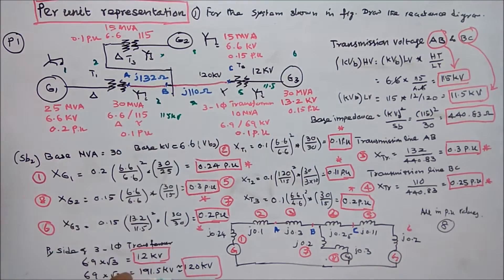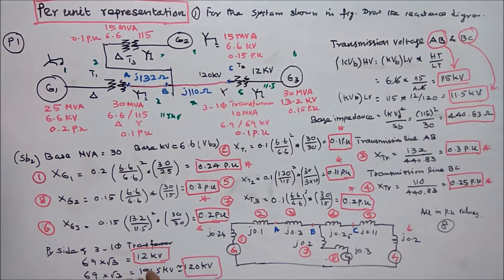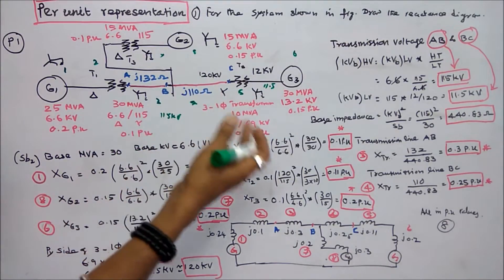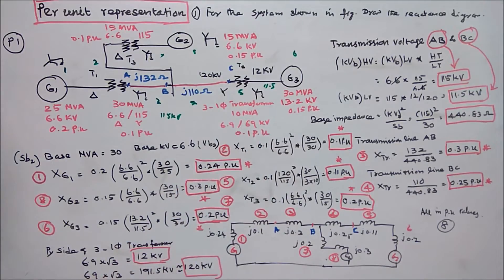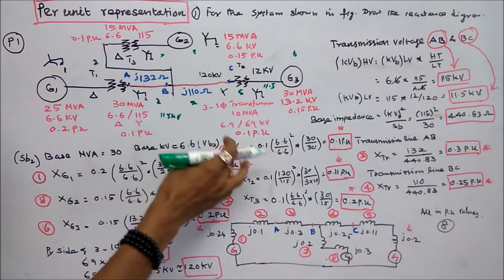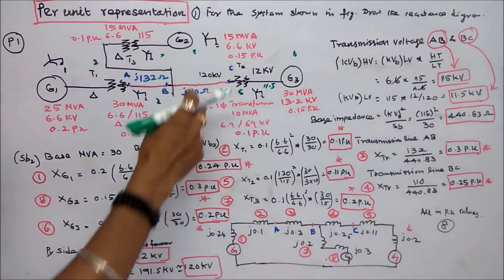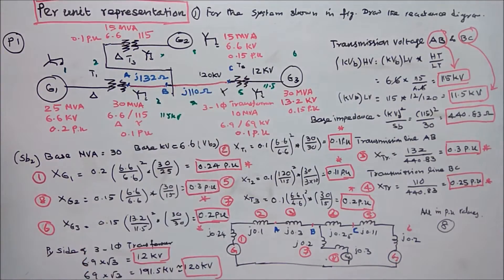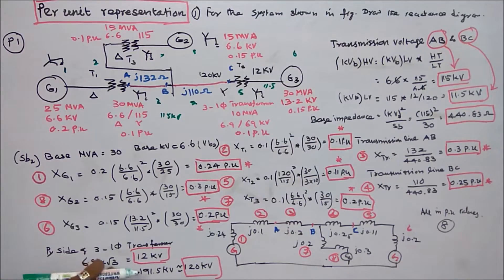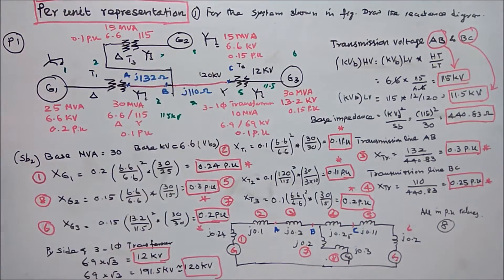Fifth is a transformer made of three single-phase transformers. So 3 into 10 equals 30 MVA. Voltage is 6.9/69 kV. Both sides are star connected. In star connection, line voltage equals root 3 times phase voltage. Therefore 6.9 into root 3 equals approximately 120 kV.